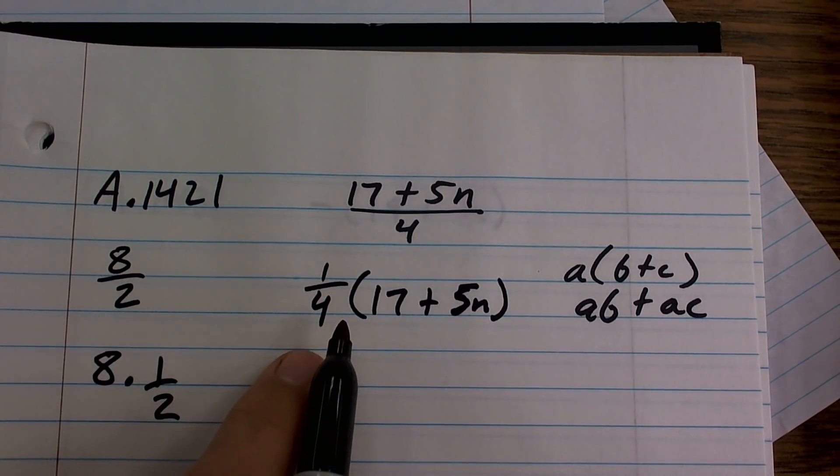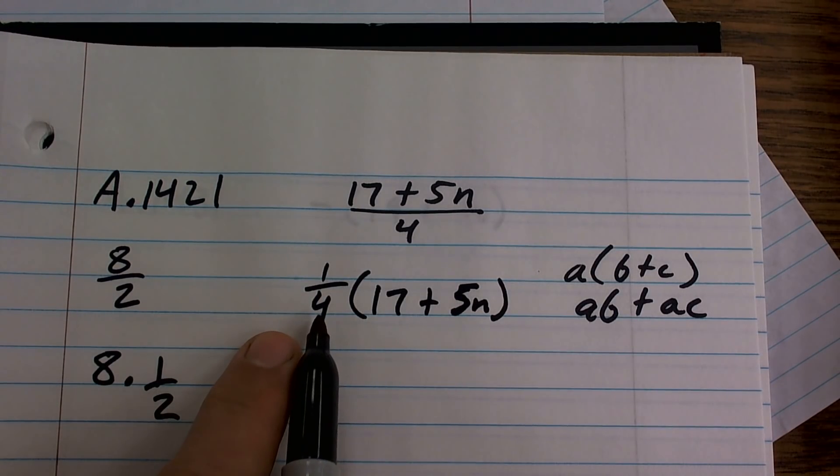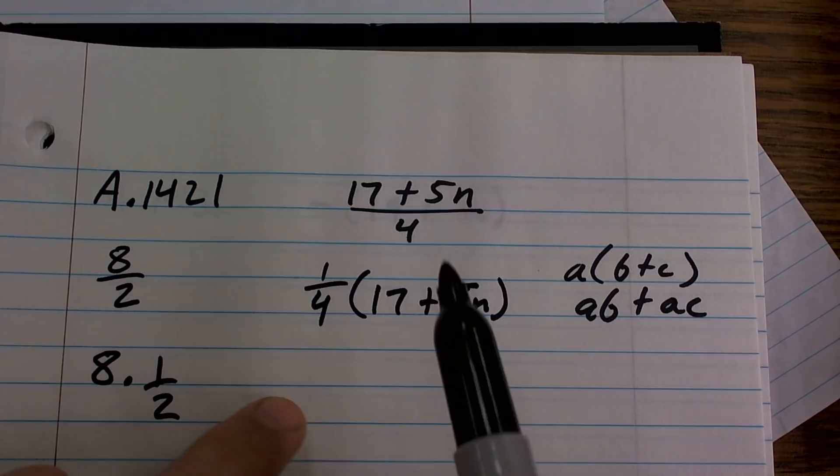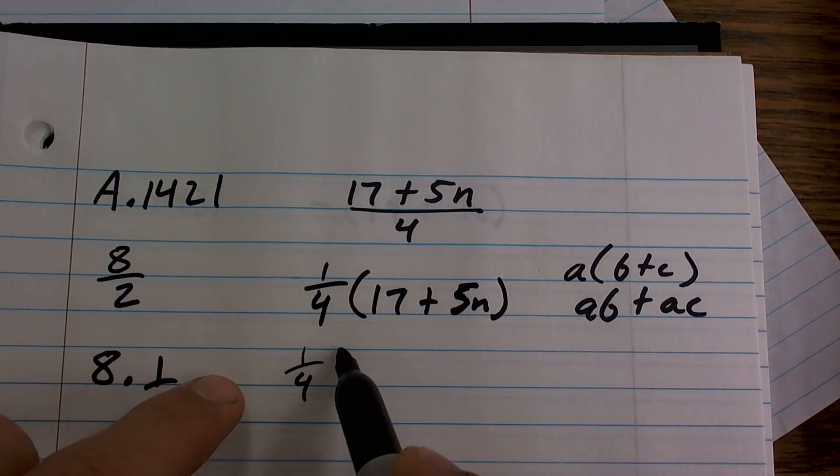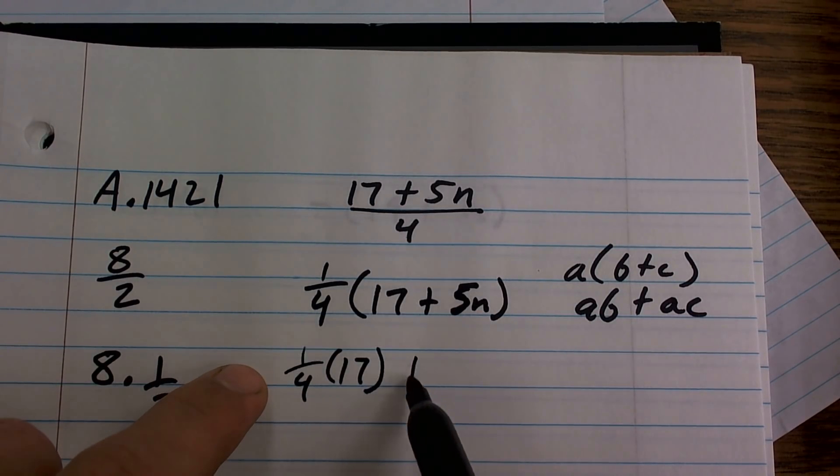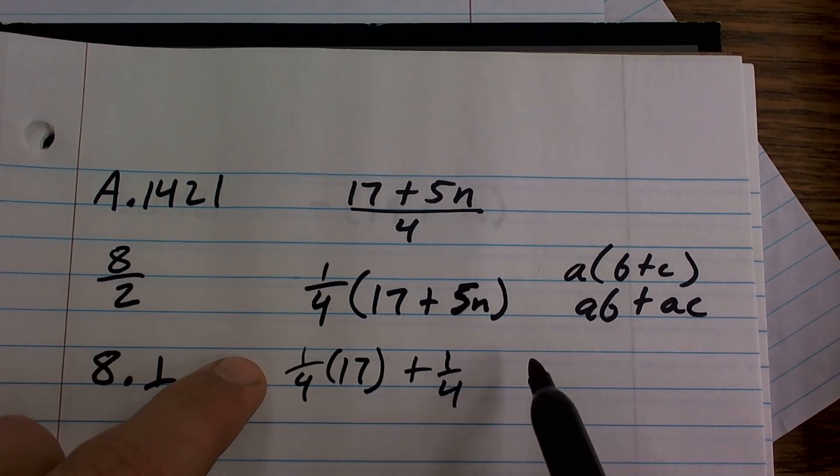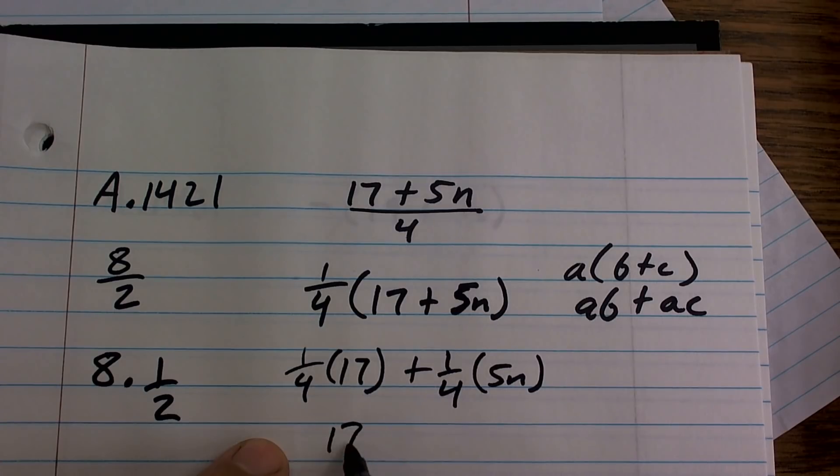Then what I notice is now I can distribute this 1 fourth to both of these terms. So I could say 1 fourth times 17 plus, because it's a positive 1 fourth, times 5n. Now I can just rewrite this as 17 fourths plus 5n fourths.